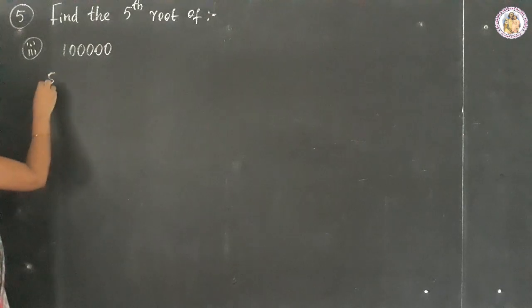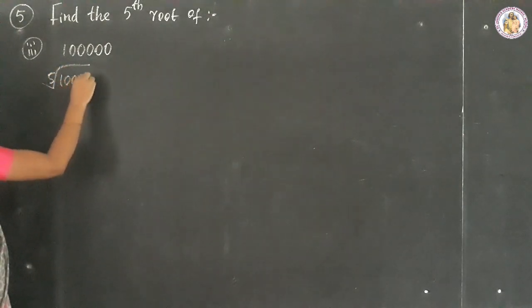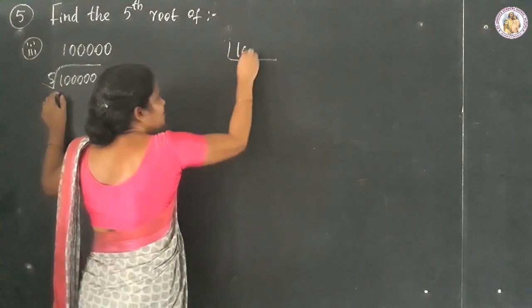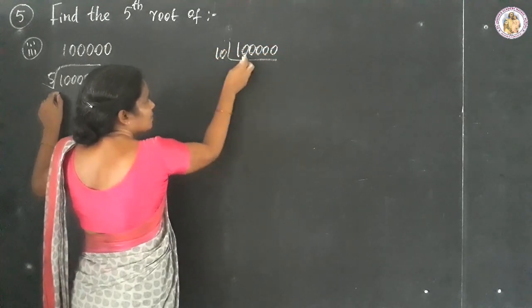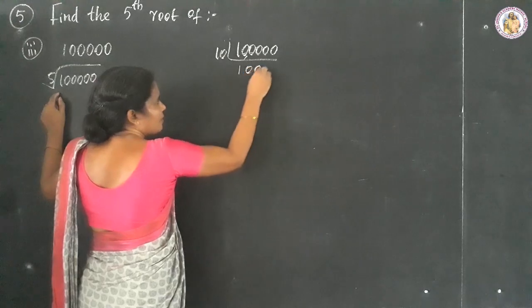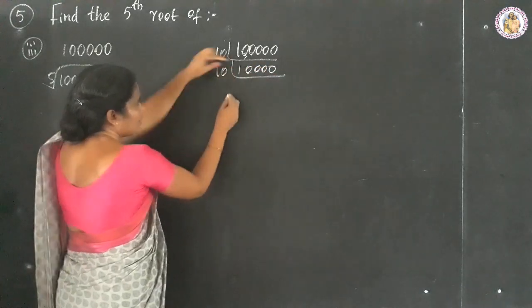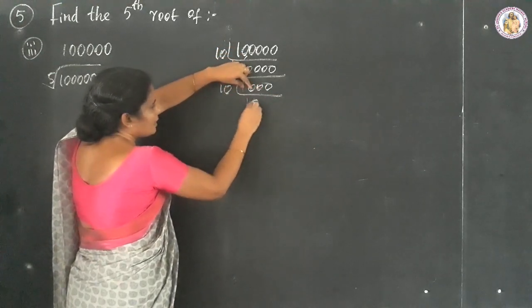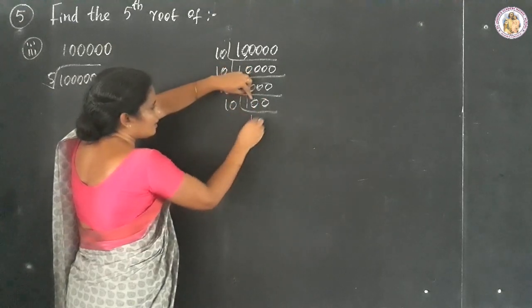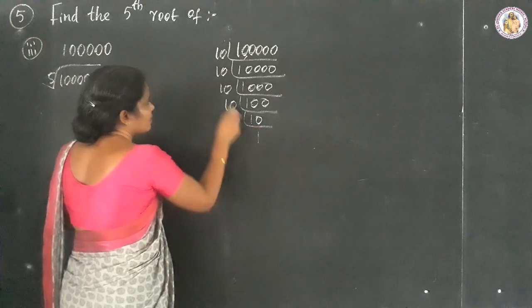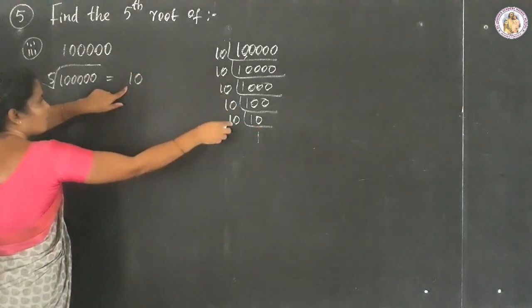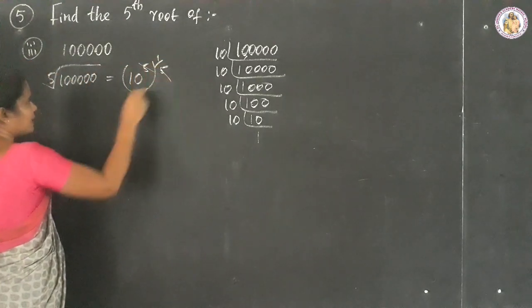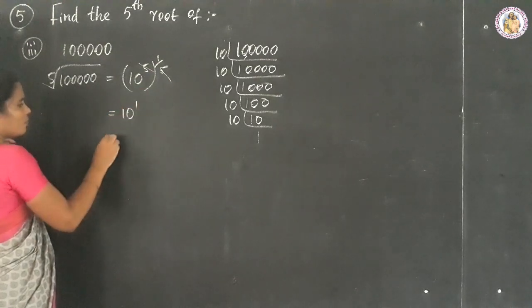Question number 3: the 5th root of 100000. Finding the LCM for 100000 — 100000 equals 10 to the power of 5. So the 5th root of 100000 equals (10 to the power of 5) to the power of 1 by 5. The 5s cancel, giving 10 to the power of 1, which equals 10.